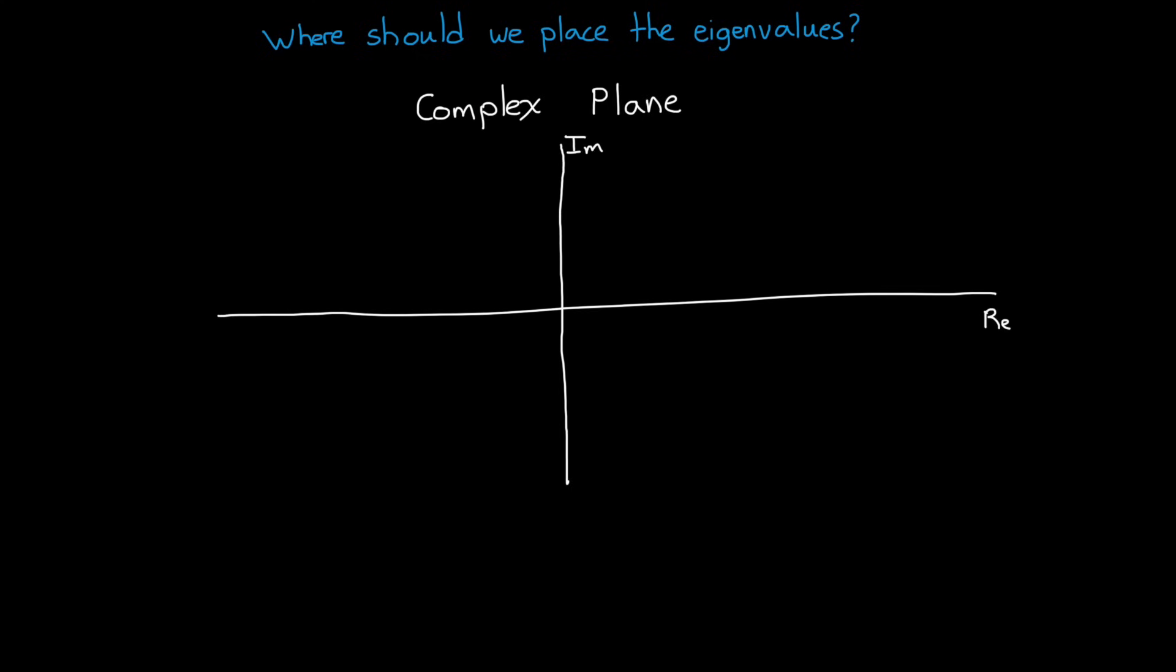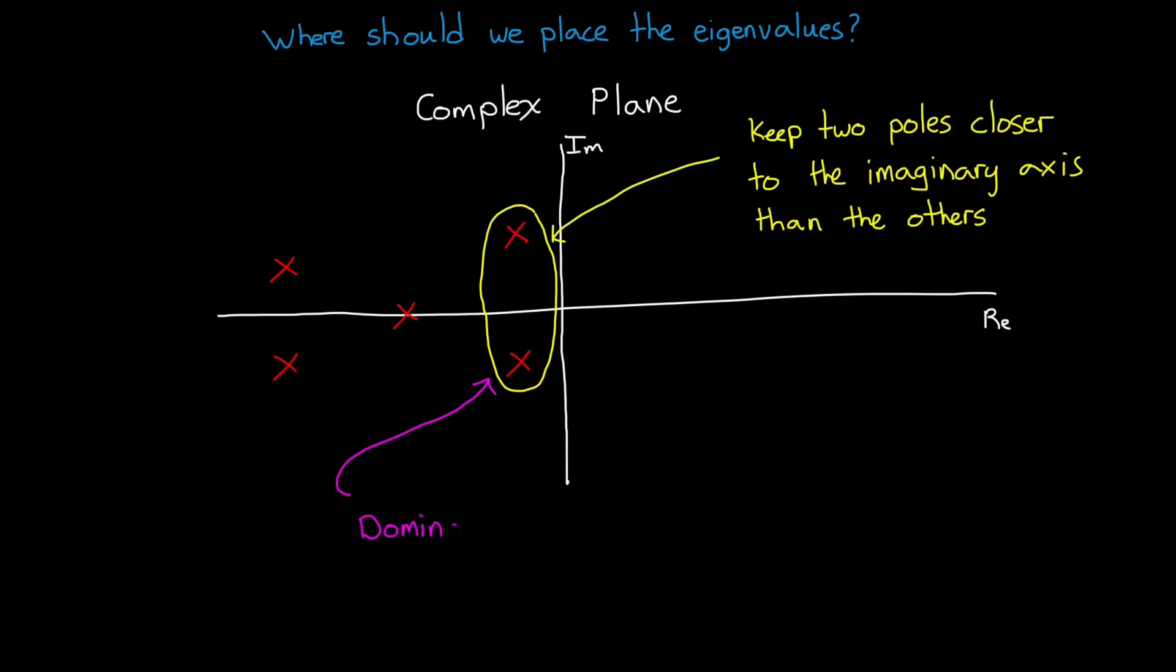Okay, we can move eigenvalues around, but where should we place them? The answer to that is a much longer video, but here are some things to think about. If you have a high order system, consider keeping two poles closer to the imaginary axis than the others so that the system will behave like a common second order system. These are called dominant poles since they are slower and tend to dominate the response of the system.